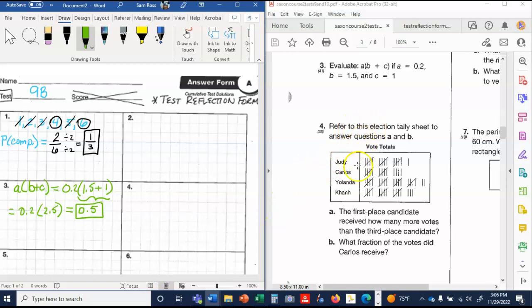Number 4. Number 4 says refer to the tally sheet. The first place candidate received how many more votes than the third place? What I'm going to do is I'm going to write how many votes people got and what place they were in. First place candidate should be Yolanda. She's in first. And she has 5, 10, 15, 22. Second place candidate is Khan. This looks almost exactly like the review. 5, 10, 15, 18. Third place is Judy, which is 5, 10, 15, 16. And then fourth place is going to be Carlos with 5, 10, 14.